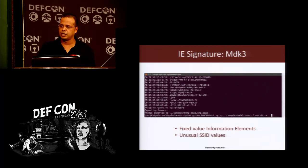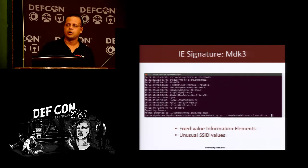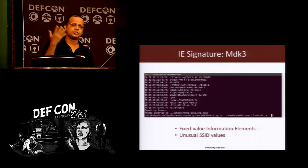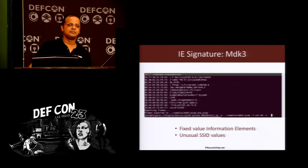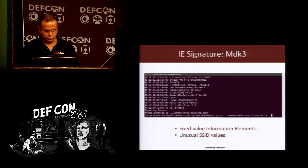The first signature we look at is MDK3. MDK3 can create fake beacon frames — the most common use is to randomize the SSID so that devices get confused and everything looks completely garbled. If you analyze the beacon frame for MDK3, you find it has both fixed IE values, and the SSID values overall are very skewed in their alphanumeric nature. We've written two scripts, one for each detection method.